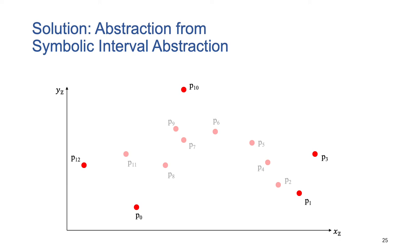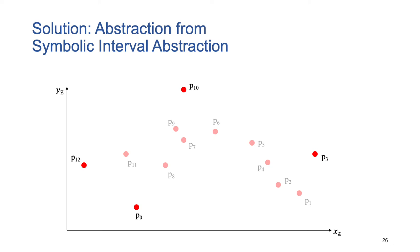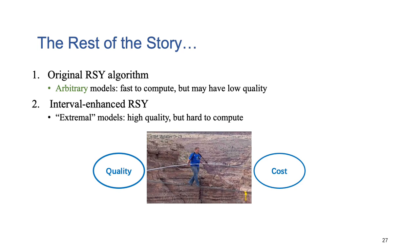Our solution is to use symbolic interval abstraction. For example, first, we will compute a symbolic interval abstraction and obtain four models, P0, P3, P10, and P12. Using four models, we can compute an intermediate polyhedron, which can cover many models. Next, we can compute the symbolic interval abstraction subjected to the uncovered models. We can obtain two models, P1 and P2. And finally, we obtain the final polyhedron.